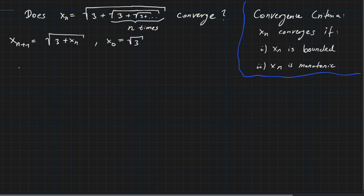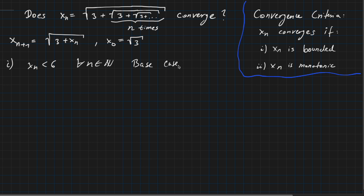First, let's look into whether the sequence is bounded — the first statement of our criteria. Let's claim that the sequence is always smaller than 6 and prove it for all natural numbers n by induction. The base case is trivial because √3 is smaller than 6, so the base case is done.